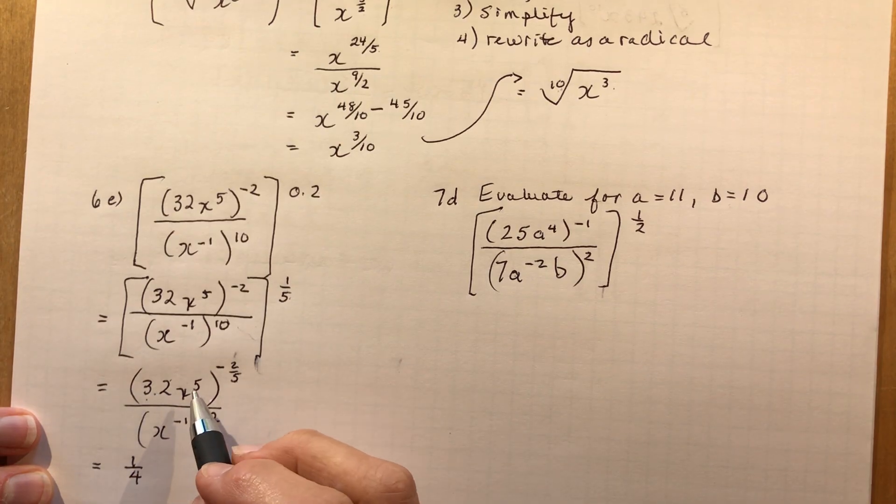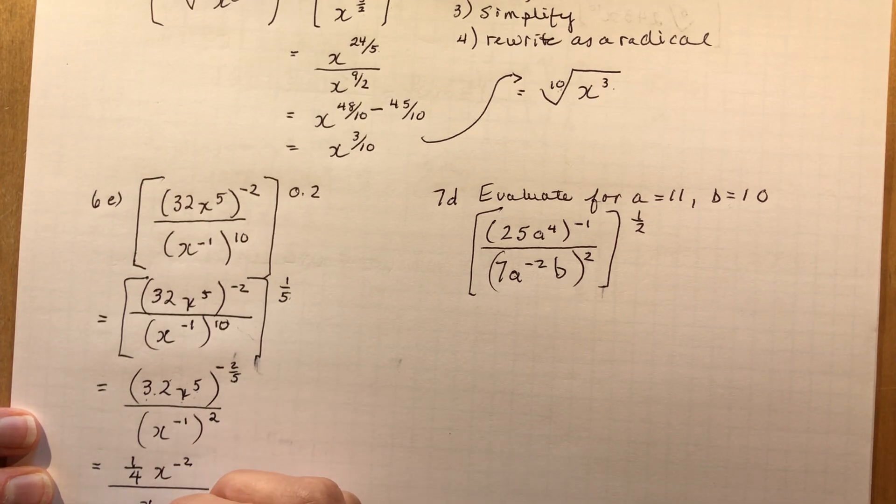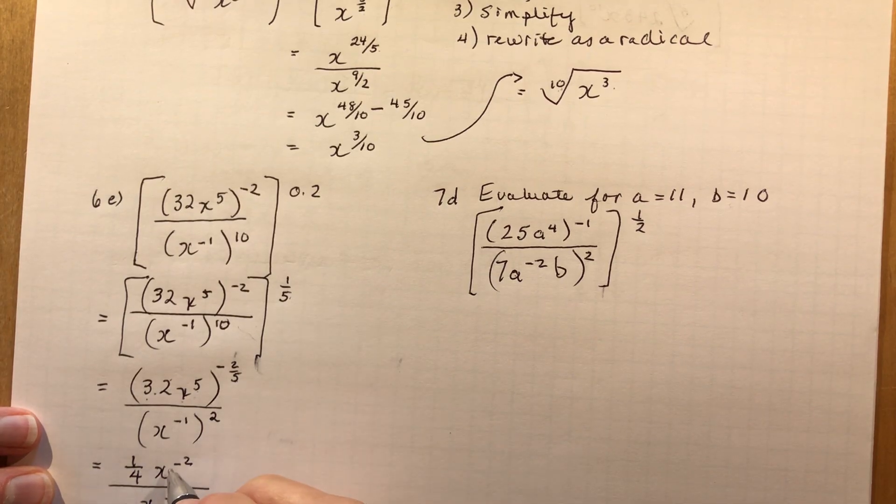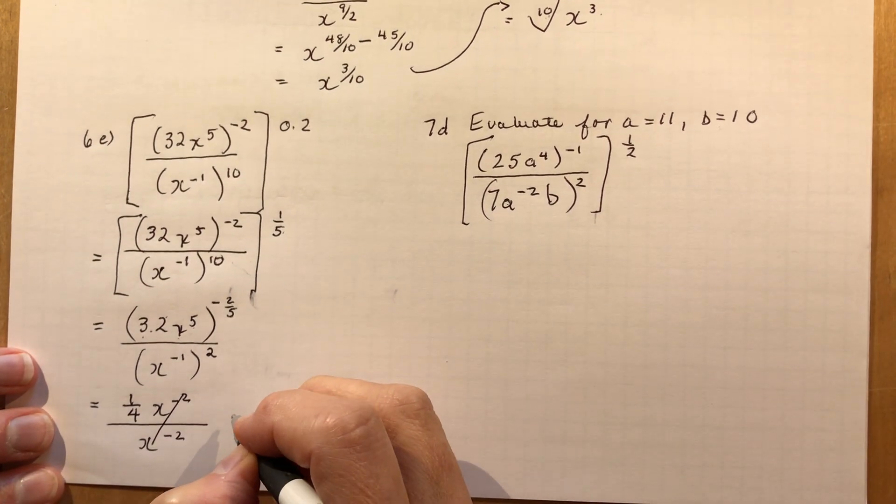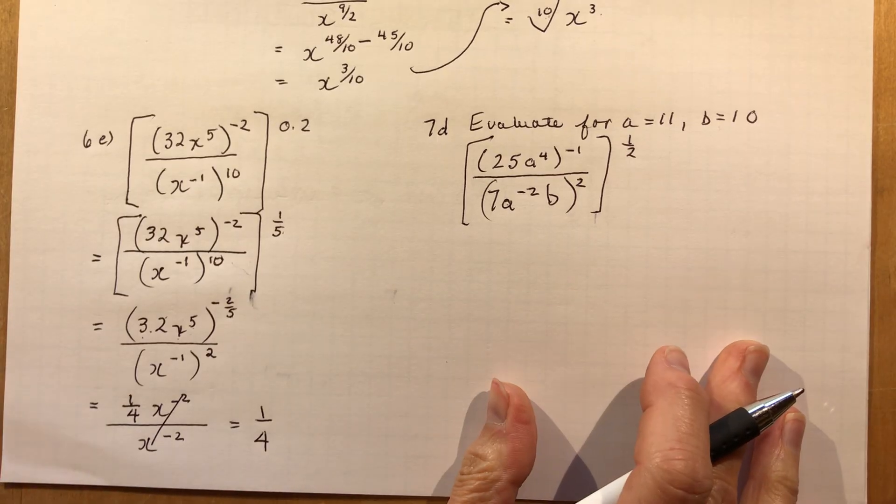So if you didn't catch that from my other lesson, pay attention. x to the fifth to the 2/5, that's x to the minus 10 over 5 or x to the minus 2. And in the denominator, I have x to the minus 2. x to the minus 2 and x to the minus 2, well those are the same thing. So my answer is 1 over 4. That's it, that's all. It wasn't so hard.